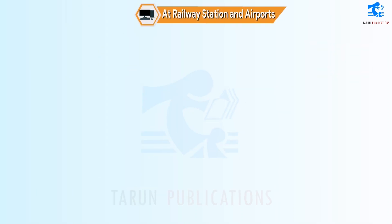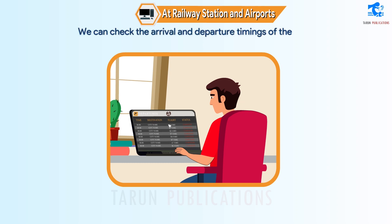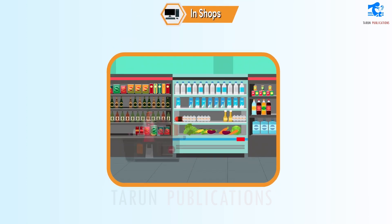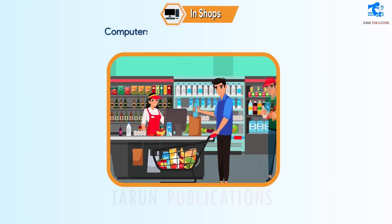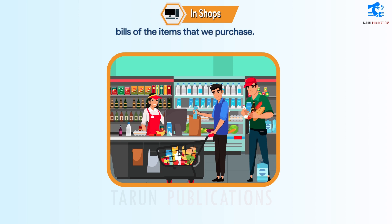At railway stations and airports, we can check the arrival and departure timings of aeroplanes and trains using the computer. In shops, computers are used to prepare bills of the items that we purchase.